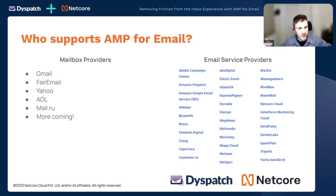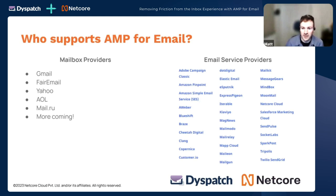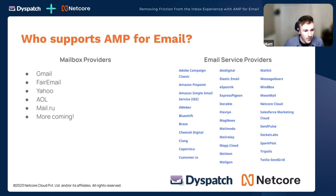Who supports AMP? On the mailbox provider side, this is the full list today: Gmail, FairEmail, Yahoo, AOL, email.ru, and more are coming. These are the mailboxes — on an iPhone in the Gmail app you're supported with AMP for email, and basically anywhere you're reading Gmail in a browser, on a phone or tablet, wherever this works today.